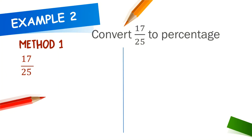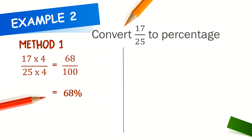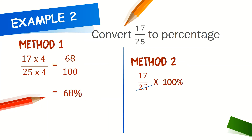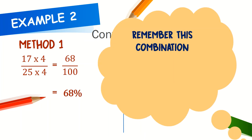Can you convert the fraction to percentage? Use the same methods used in example 1. Since the denominator is 25, we multiply with 4 to get 100. Remember this combination so that it will be easier.